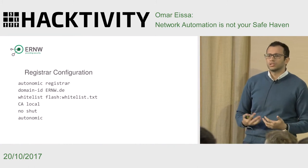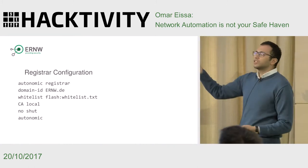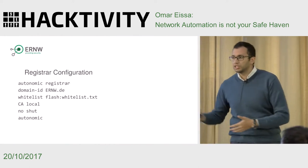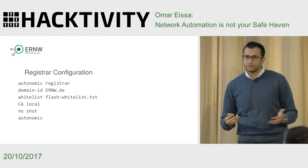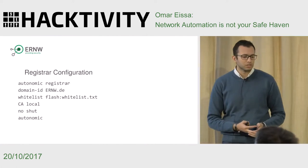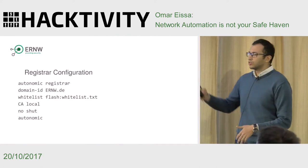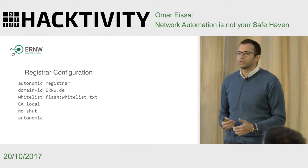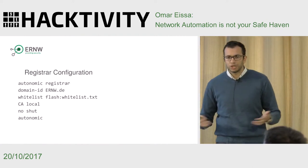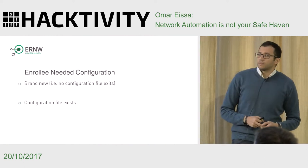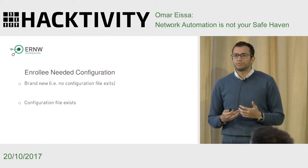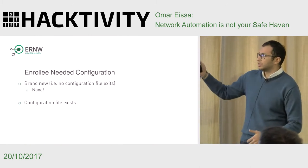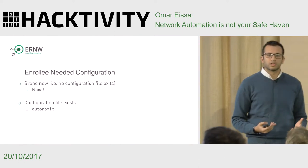The five commands we keep mentioning: you say this device will be the registrar, you define the domain ID, optionally add a whitelist — if you don't, every device will be accepted. You define the type of CA, whether local on the same device or a dedicated one with an IP address. Then just 'no shutdown' to enable the services and 'autonomic.' Three or four commands and you have a fully running network. For a brand new device, you configure nothing at all. For an existing device, just the single command 'autonomic.'